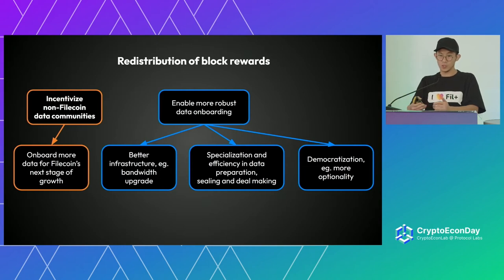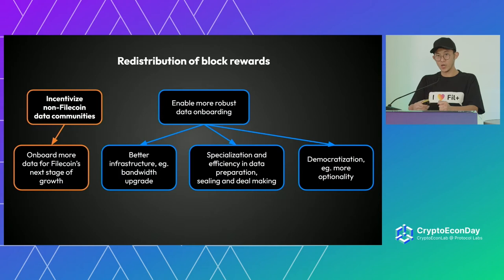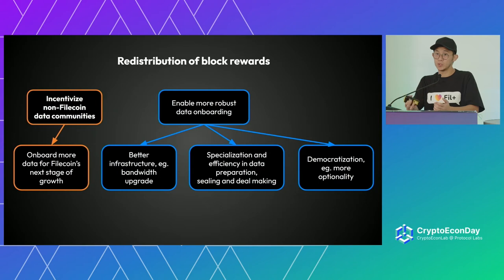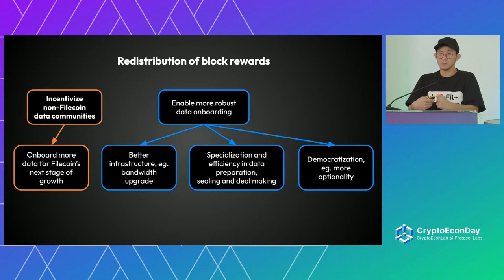This redistribution also enables smaller storage providers to source deals more easily — they can go to Big Data Exchange and find one or two tebibytes of data, making things more decentralized. We've also noticed that data clients may require certain things from storage providers, such as faster bandwidth speed. Right now most of our storage providers are around 3 Gbps, though some have 30 or less — faster bandwidth is better for network growth.